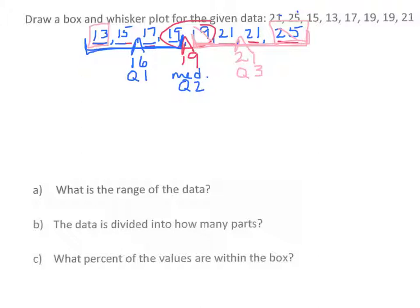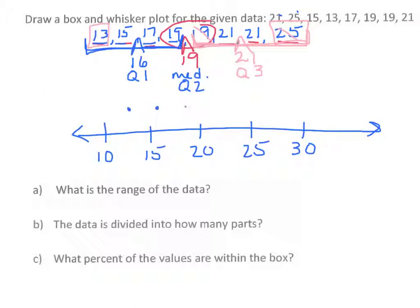Now you'll want to make your number line. Look at your information that you have. We go from 13 as our lowest to 25. So let's count by fives. Start at 10, 15, 20, 25, 30. And let's put in our five dots. We have a 13. So maybe about right here. 16 for quartile 1. 19 for quartile 2. Or the median. 21 for quartile 3. And 25 for our highest value.